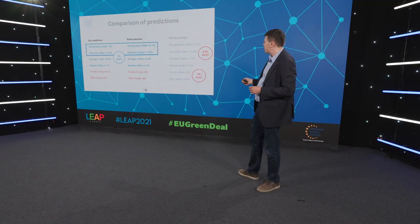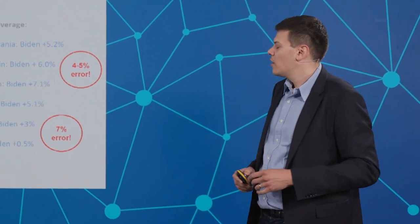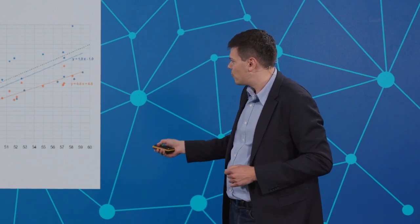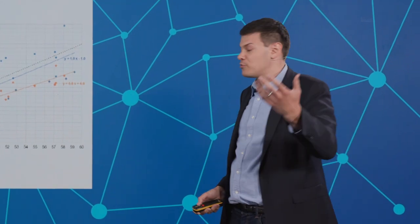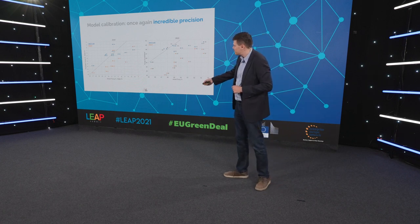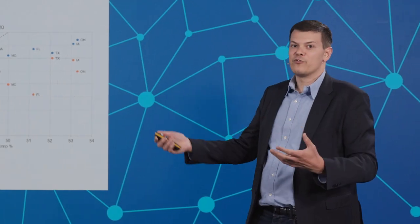Just to visualize the errors: these are our predictions versus the final outcome, and this is the polling averages. The polling average errors were about 4% to 5% for these states, even 7% for Florida or Ohio. For us, it was around 1%. We correctly estimated the winner of the race. Again, you can see the calibration of the model. Our error was around 1%, whereas the pollsters had this time between 6% to 7% errors, which is pretty large. Even though they fixed their models, they still haven't been able to make the accurate prediction. The orange ones on the chart are the polls — notice how much they significantly underestimated Trump once again.